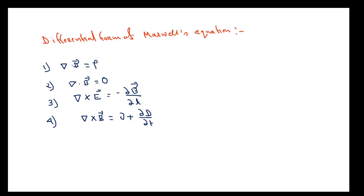These are the 4 differential forms of Maxwell's equations: Gauss law in electrostatics, Gauss law in magnetostatics, Faraday's law, and the modified Ampere circuital law. We are now going to derive how we get these — specifically how we convert the Gauss law from integral form to differential form.